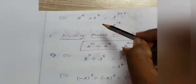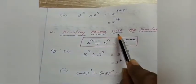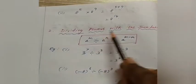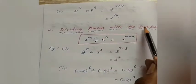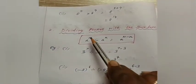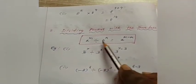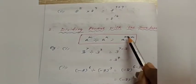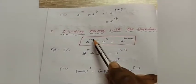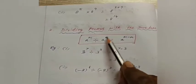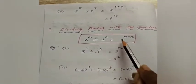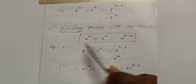The second law is dividing powers with the same base. The formula is: a power m divided by a power n is equal to a power m minus n.